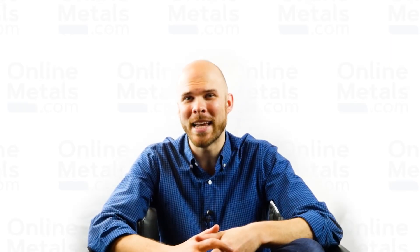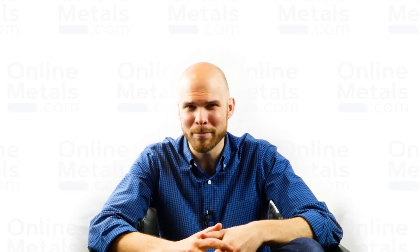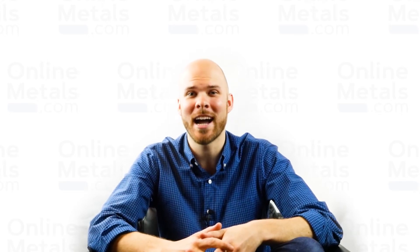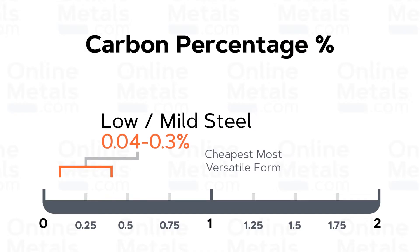Carbon steel is further broken down into four groups based on carbon content: low, mild, medium, high, or ultra-high. Also known as mild steel, low carbon steel contains approximately 0.04 to 0.3 percent carbon. Because of this it's malleable, ductile, tough, very easy to weld, and one of the cheaper forms of steel. An example would be 1018 steel.